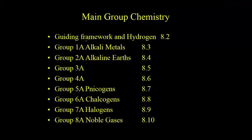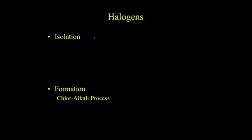So far, we've gone through all these groups in the Main Group Chemistry, and now we're ready for Group 7A called the Halogens. Halogen means salt producers. When you react these with metals, they make salts, and actually they were isolated from the salts.